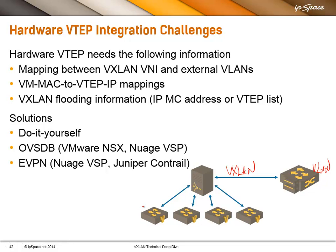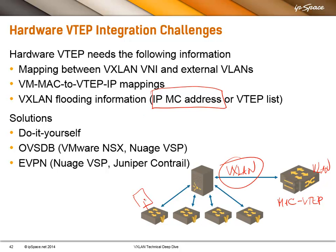Second, if a VM is here, this one needs to have a mapping between MAC address and the VTAP IP address. And finally, if we are using multicast-based VXLAN, we need to know the IP multicast address of the VXLAN segment. And if we are not using multicast-based VXLAN, if we are using controller-based VXLAN, then the hardware gateway needs a list of VTAPs. There are a number of ways you can solve this.